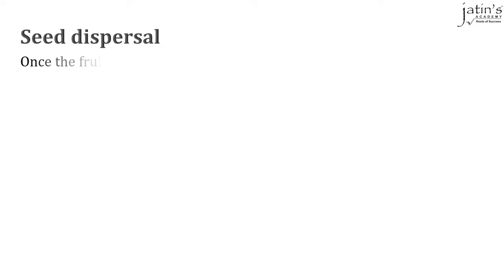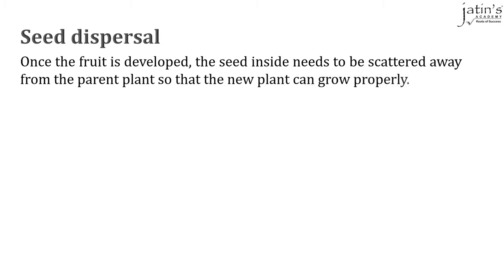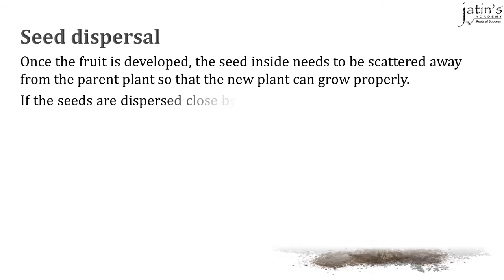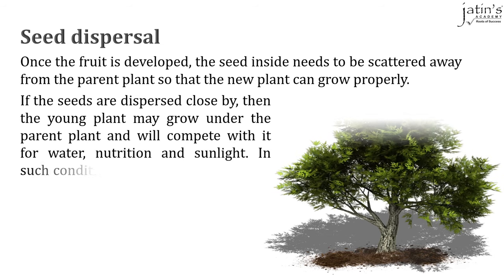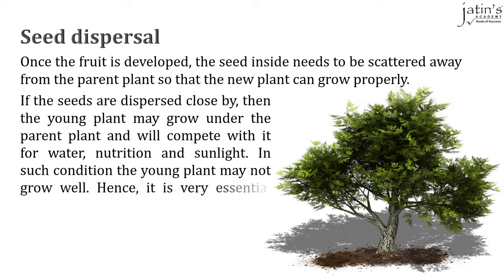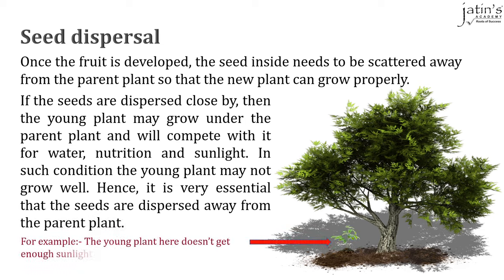Once the fruit is developed, the seed needs to be dispersed away from the plant so that it can grow into a young plant. The seed inside needs to be scattered away from the parent plant so that the new plant can grow properly. If seeds are dispersed close by, the young plant may grow under the parent plant and will compete with it for water, nutrition and sunlight, and may not grow well. Hence it is very essential that the seeds are dispersed away from the parent plant.